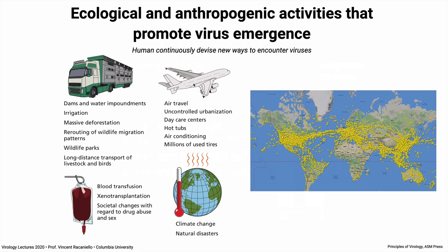Humans continuously devise new ways to encounter viruses. From our hunter-gatherer ancestors who lived in small groups of 100 or 200 people, to now having amazing global travel networks. We also do other things that increase infection risk: dams and water impoundments that create new environments for virus hosts, deforestation rerouting migration patterns, wildlife parks, long-distance transport of livestock and birds, and people buying exotic pets — which come with their own viruses. Blood transfusion, xenotransplantation, sexually transmitted viruses, and drug abuse also contribute.